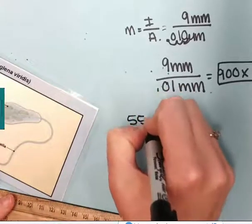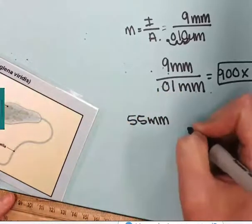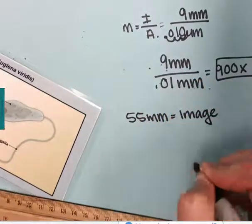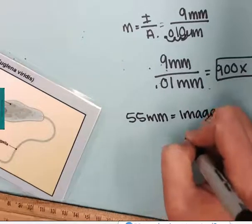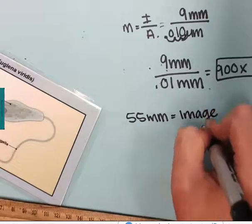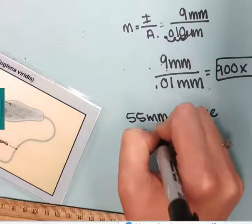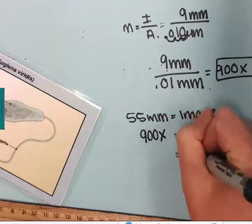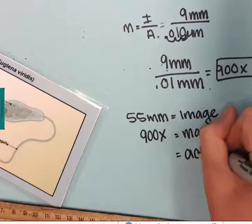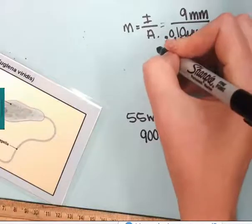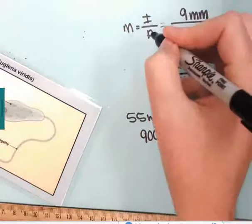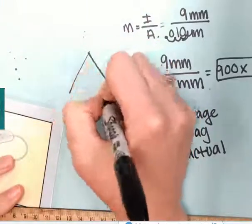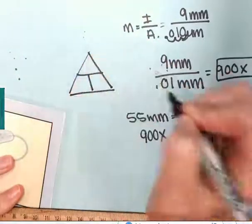I'm getting 55 millimeters, so 55 millimeters is going to be the length of the image. I know the magnification was 900x. What I really want to know is the actual, so you can rearrange this formula or you can use your little triangle.